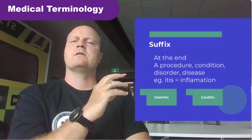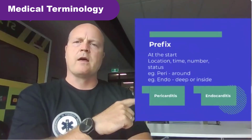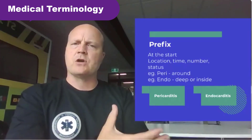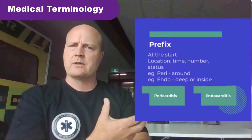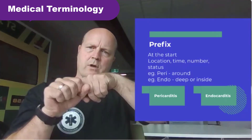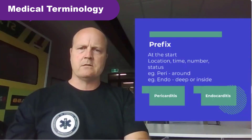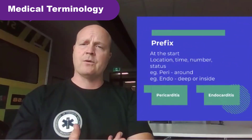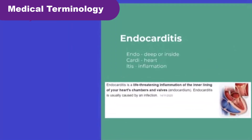The more we learn our prefixes, suffixes, and root words, the easier it is to piece them together. Prefix we find at the start of a word, and it's going to tell us things like location, time, number, status, or the colour of a thing. For example, 'peri' means around, and 'endo' at the start means deep or inside. So pericarditis: peri is around, cardi means heart, itis is inflammation — inflammation around the outside of the heart. And endocarditis: endo is deeper inside, cardia is heart, itis is inflammation — so inflammation or swelling on the inside of the heart.